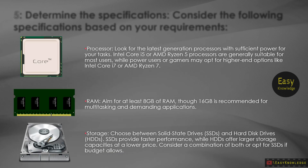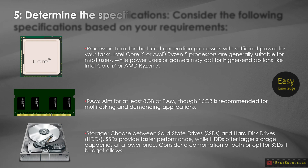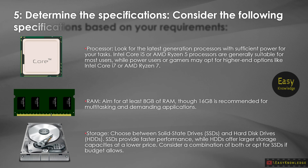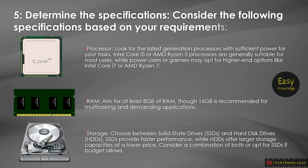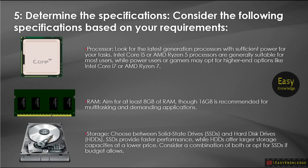Step 5: Determine the specifications. Consider the following specifications based on your requirements. Processor: Look for the latest generation processors with sufficient power for your tasks. Intel Core i5 or AMD Ryzen 5 processors are generally suitable for most users, while power users or gamers may opt for higher-end options like Intel Core i7 or AMD Ryzen 7. RAM: Aim for at least 8GB, though 16GB is recommended for multitasking and demanding applications.